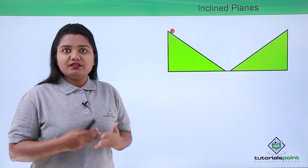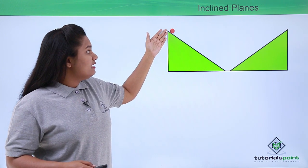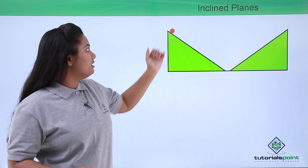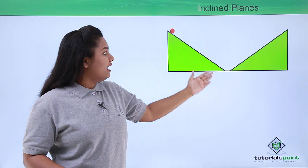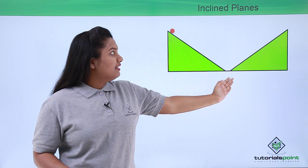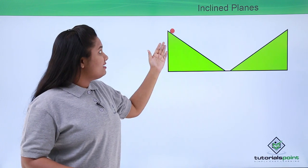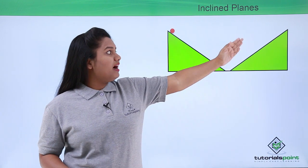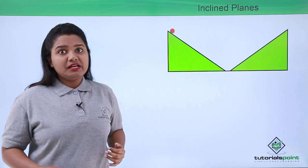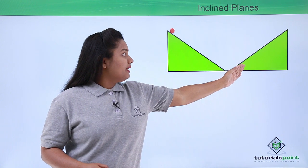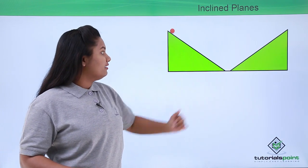Galileo argued that when a marble is released from a certain height, it would roll down the first inclined plane and then climb up the second inclined plane, reaching the same height on the second plane as well. These two planes are identical in their angles of inclination.